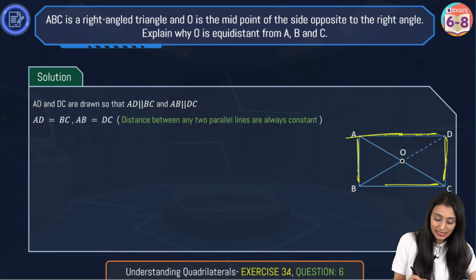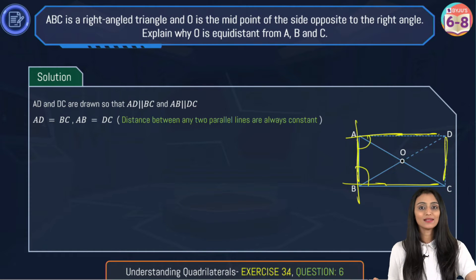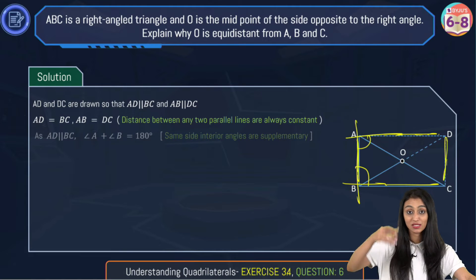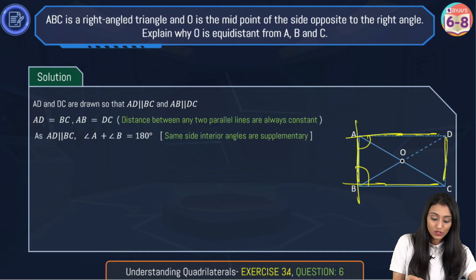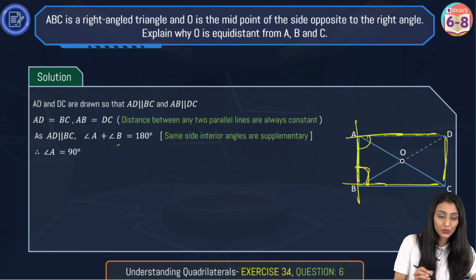Now since these lines are parallel, this is a transversal. So the sum of both these two angles is going to equal 180 degrees because they are on the same side of the transversal. So angle B is 90 degrees, so angle A will also be 90 degrees if you substitute here.